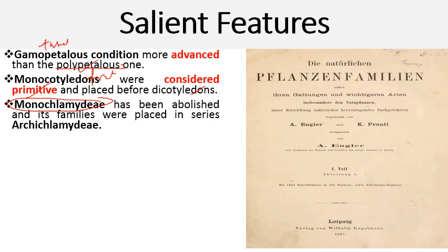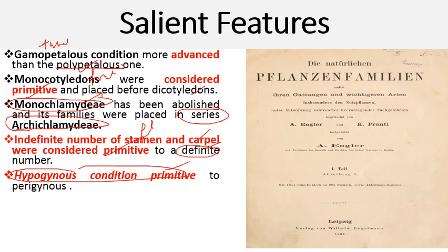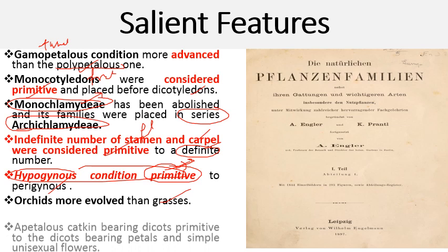The group Monochlamydeae was abolished and its families were placed in series Archichlamydeae. Flowers bearing an indefinite number of stamens and carpels were considered primitive, as compared to plants having a definite number of carpels and stamens. The hypogynous condition of the ovary was considered primitive, while the perigynous condition — having a half-superior, half-inferior ovary — was considered more evolved or advanced.